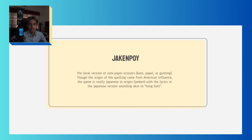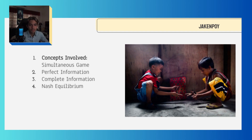Jack and Poy is the local Filipino version of rock, paper, scissors, also known as Bato, Papel, at Gunting. Though the spelling came from American influence, the game is Japanese in origin — called Janken. The concepts involved in Jack and Poy are: 1. Simultaneous game, 2. Perfect information, 3. Complete information, and 4. Nash equilibrium.